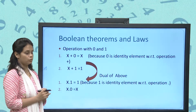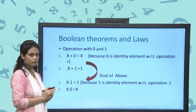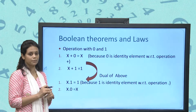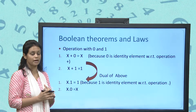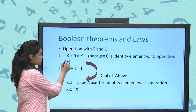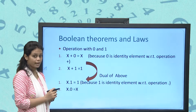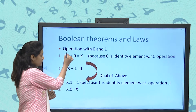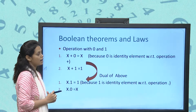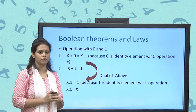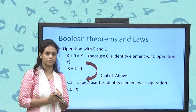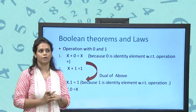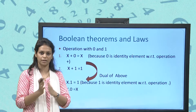For x + 0: the plus operation always returns the greater element. Since 0 is the smallest element, the output of x + 0 is x. This makes 0 the identity element for the plus operation, just as in normal arithmetic where adding 0 to any number returns that number.